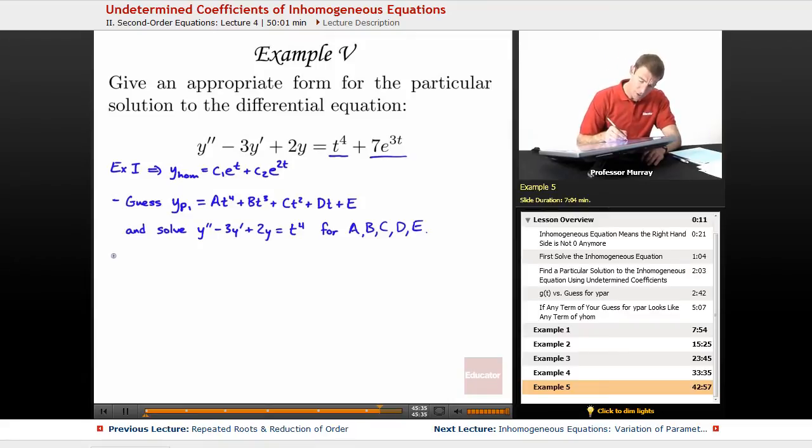So, after you solve that part, then you have to deal with this problem. We'd guess 7e to the 3t. So, we'd guess a new particular solution, yp2. Now, I'm going to guess something of the form e to the 3t.